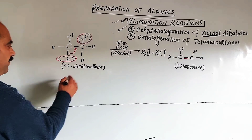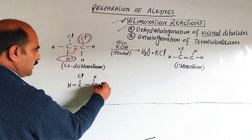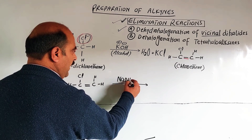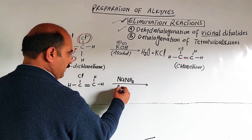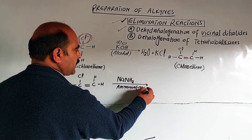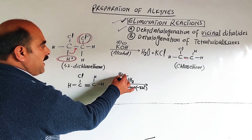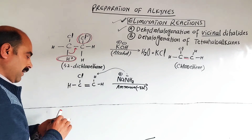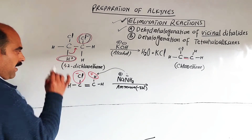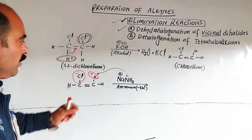The NH2 negative ion from sodium amide is a stronger base. It attacks and removes the partial positive hydrogen — dehydrogenation occurs. The chloride ion is also removed — dehalogenation occurs. Again, elimination happens: hydrogen and halogen are removed from adjacent carbons, dehydrohalogenation occurs, removal of HX. One hydrogen remains on one carbon and one on the other, and HC double bond CH is formed.